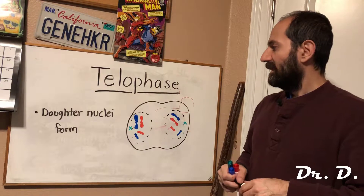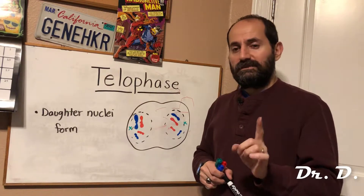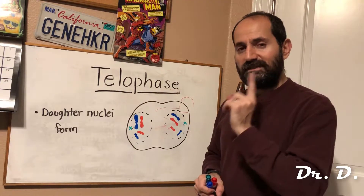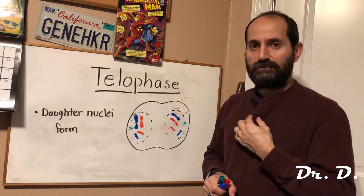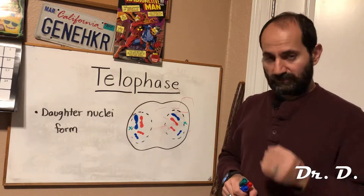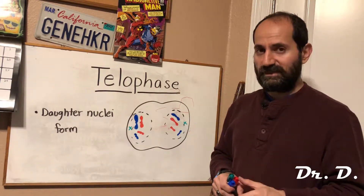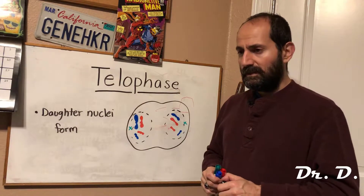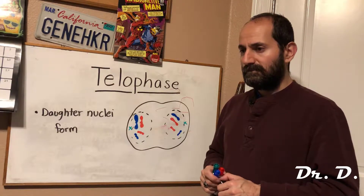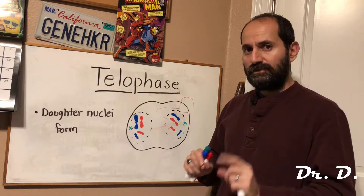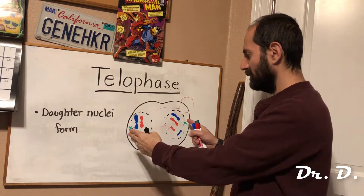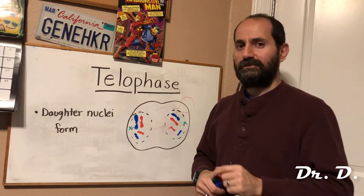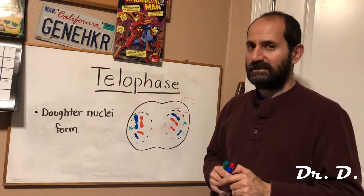At the end of mitosis, what have we achieved? What is the product of mitosis? This is what you need to understand. By the end of mitosis, you should have two genetically identical cells. It's very important that you understand this.